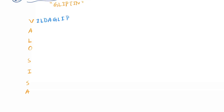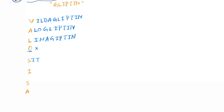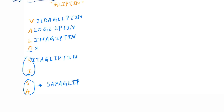Now for DPP-4 inhibitors, you can remember the mnemonic V-A-L-S: V for vildagliptin, A for alogliptin, L for linagliptin, S for sitagliptin, and SA for saxagliptin. So that completes the DPP-4 inhibitors.